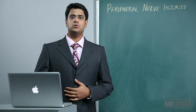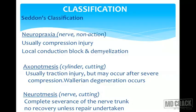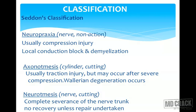Let's go first to the classification of peripheral nerves. The important classification is the Seddon's classification. You must know the three headings: neuropraxia, axonotmesis, and neurotmesis. These are the three main parts of the classification.